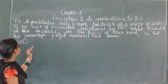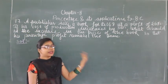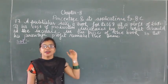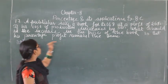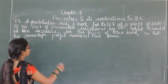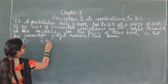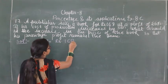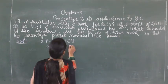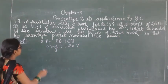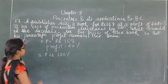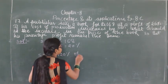A publisher sells a book at a profit of 20%. The selling price is ₹168. If his cost of production increases by 30%, what should be the increase in the price of the book so that his percentage profit remains the same?